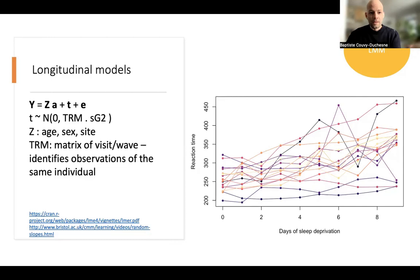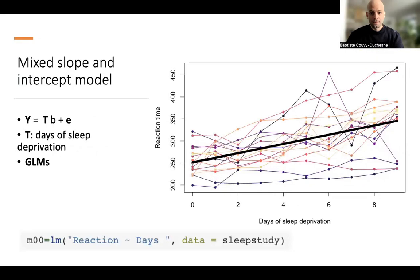So I hope the connection is quite direct with what we've seen before. For example, for the ACE model, where we have an assumed dependency between observations, which are people from the same family. Here we have a known dependency between observations, which is time or the fact that it's the same individual which comes back. So let's start with the simplest model again, and then complexify. So here we start with a GLM, a generalized linear model, which is the reaction time as a function of the days of sleep deprivation. We estimate an intercept, which is here around 250, and then a fixed effects relationship between reaction time and days of sleep deprivation.